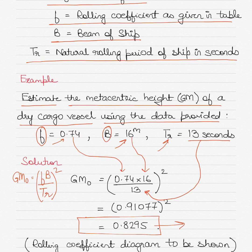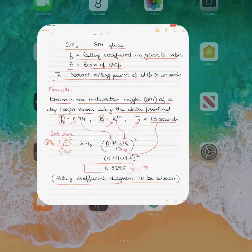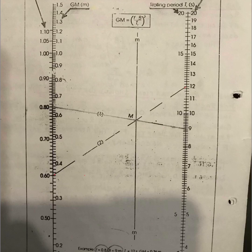Here I would like to show you the rolling coefficient diagram, because that is often used to determine the initial GM as well. Let me go to that diagram and show you how it is worked out. I will not take this example but a separate example.